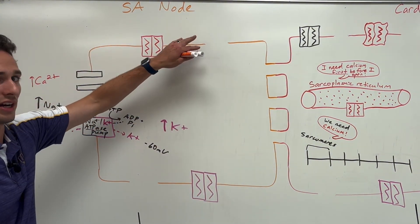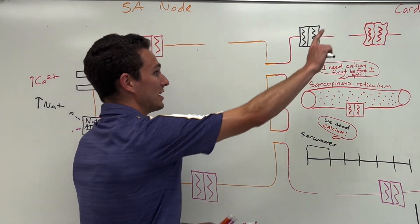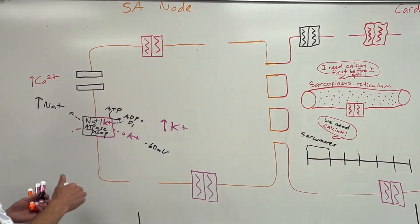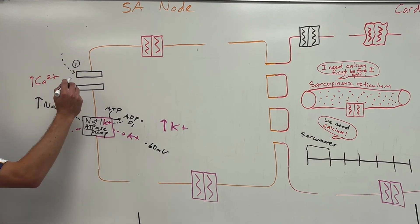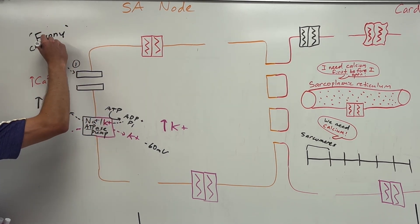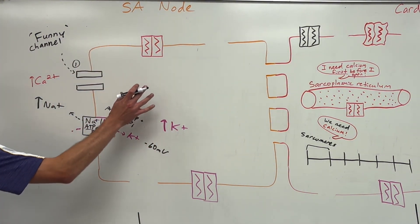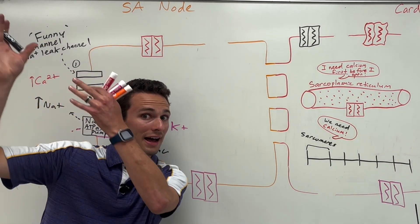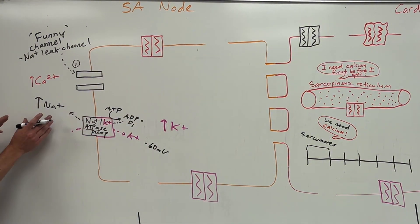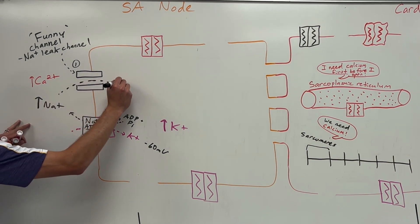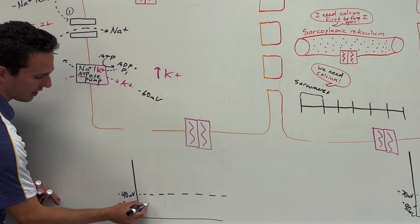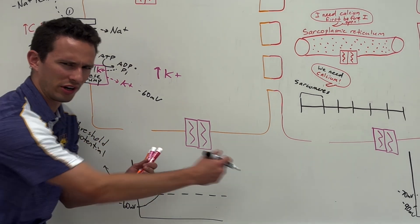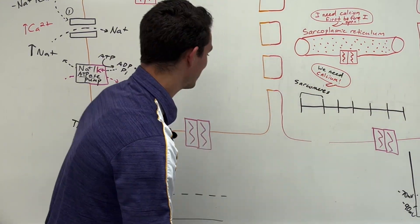We need membrane proteins to help facilitate bringing these things in and out, with the key goal being getting calcium in to contract the heart. We start with a protein channel called a funny channel — one of my favorites. It's called a funny channel because it's very rare, really only found in pacemaker cells, and it is a sodium leak channel. That means it allows sodium to literally leak from high to low concentration constantly. So sodium begins entering the cell, upticking the charge of the pacemaker cell ever so slightly until it reaches negative 40 millivolts. This is called the threshold potential — think of it as the point of no return. Once you cross the threshold, something's going to happen.